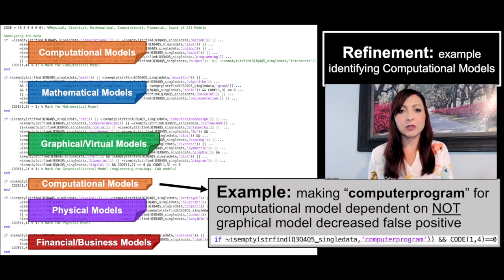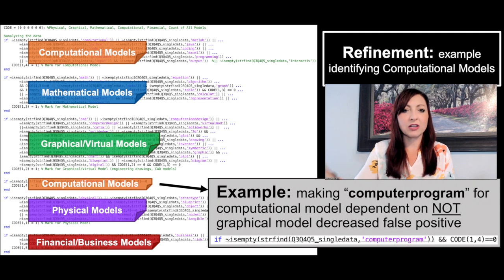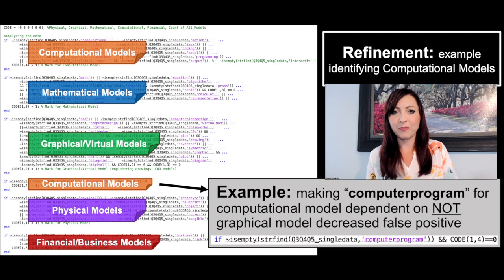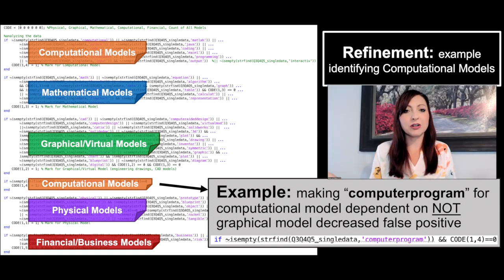As a computer, it can't really do that on its own. However, there is a system in place: if something is already identified as a graphical model or 3D CAD or engineering drawing, it will not read 'computer model' as a computational model. And if someone says 'computer program' without that context, we assume computational model. This is just one example of how we went through and built logic to catch and decipher different types of models. It's especially good for large datasets — something that might take people months to do, this program can do in seconds.